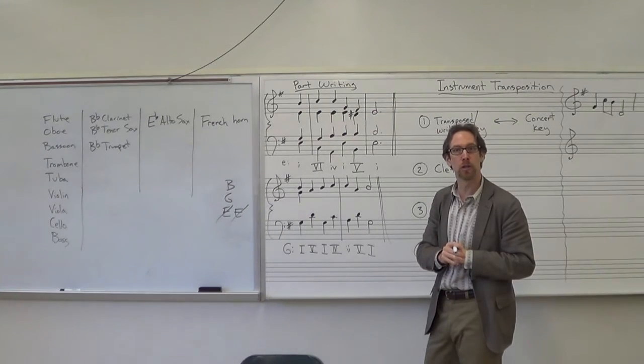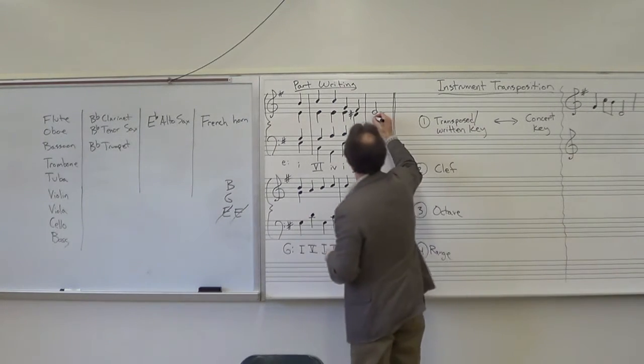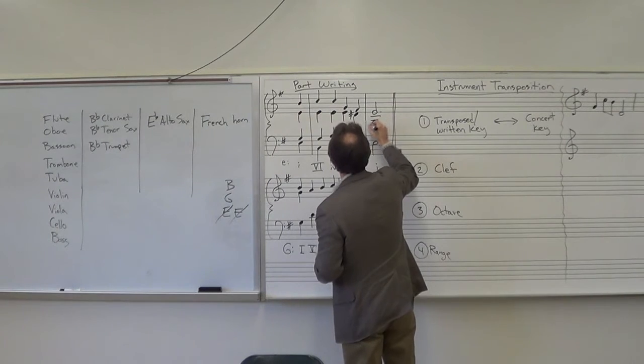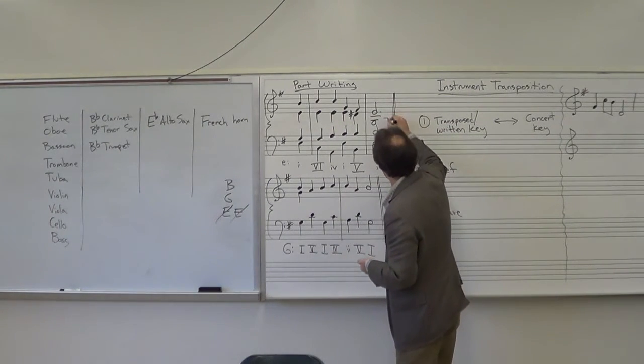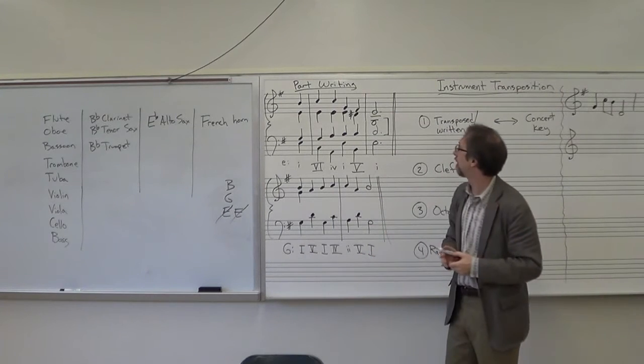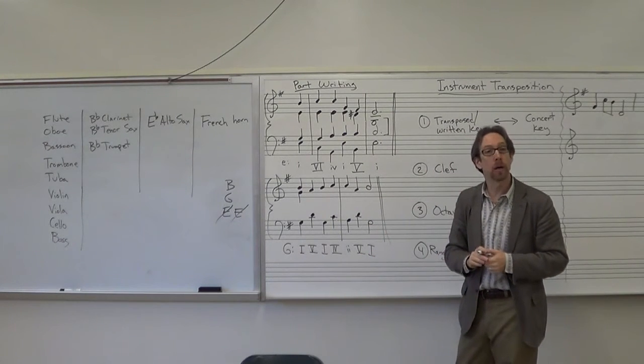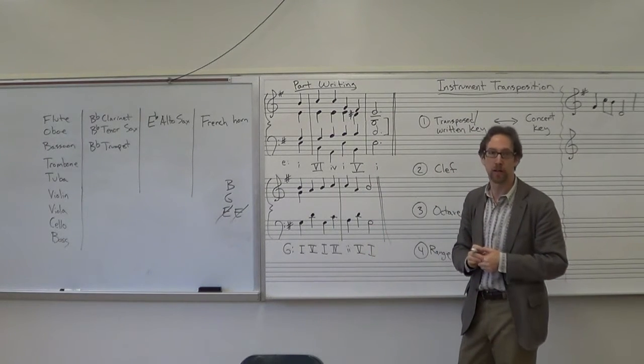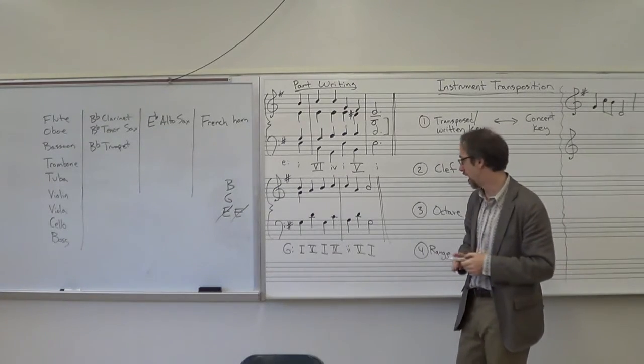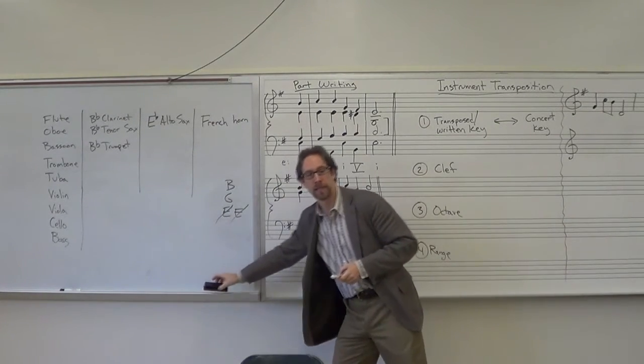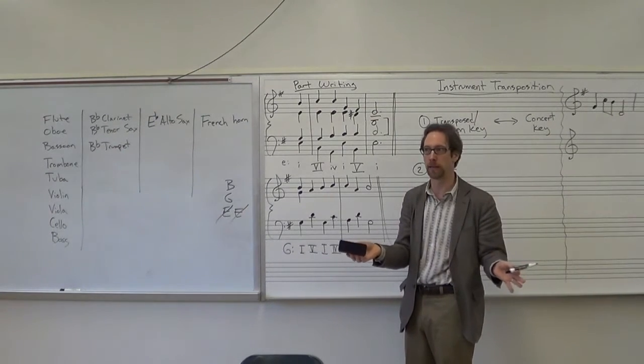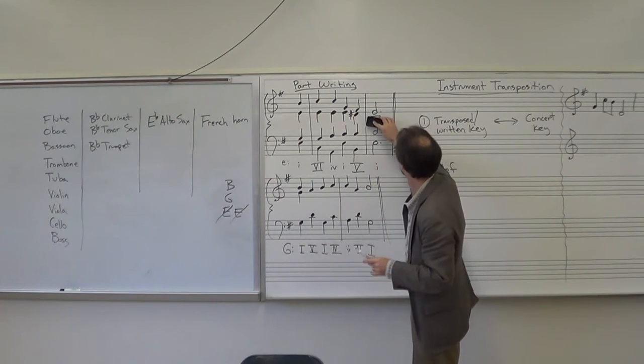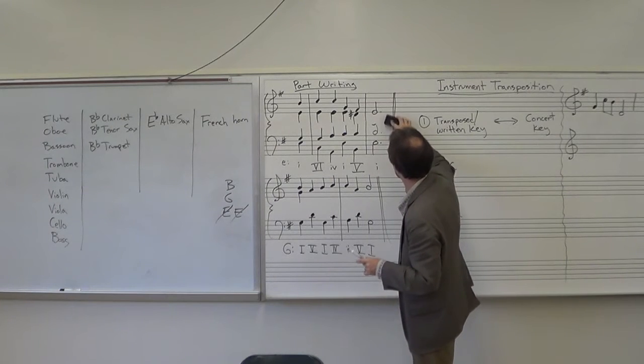The problem is, where are you going to put the G? Well, I'm going to put it right here. That's a problem. Because now the alto voice is lower than the tenor voice. That's called voice crossing. We are not allowed to do that. Yes, Bach every now and then does voice crossing. We're not Bach yet. Soon. So we can't do that.